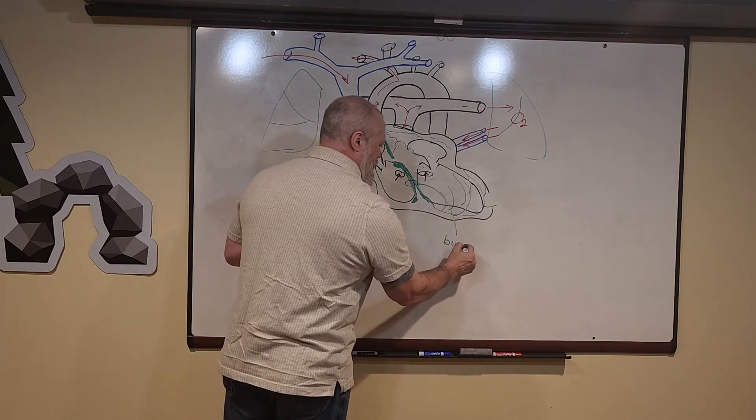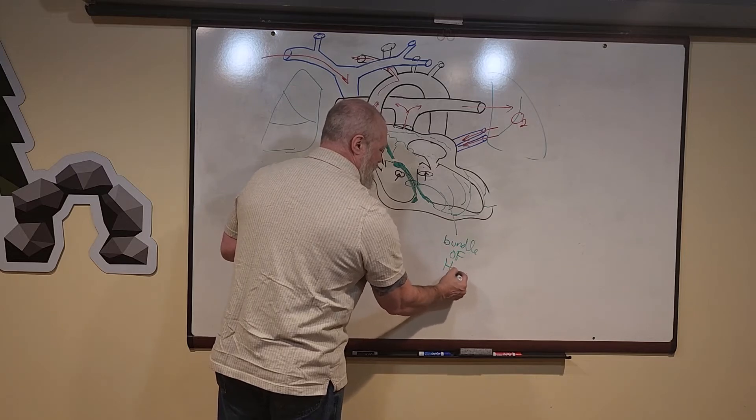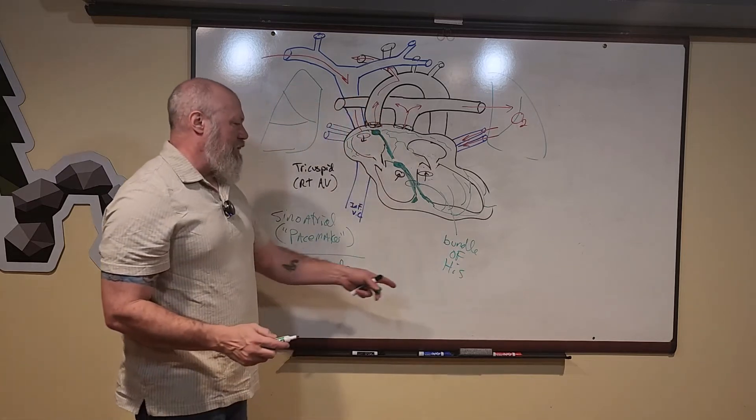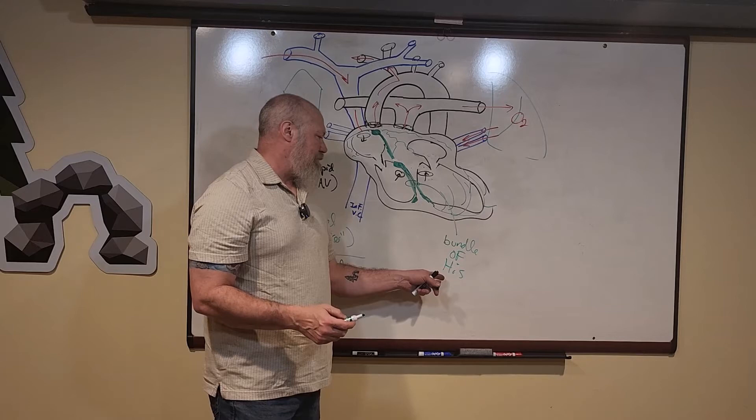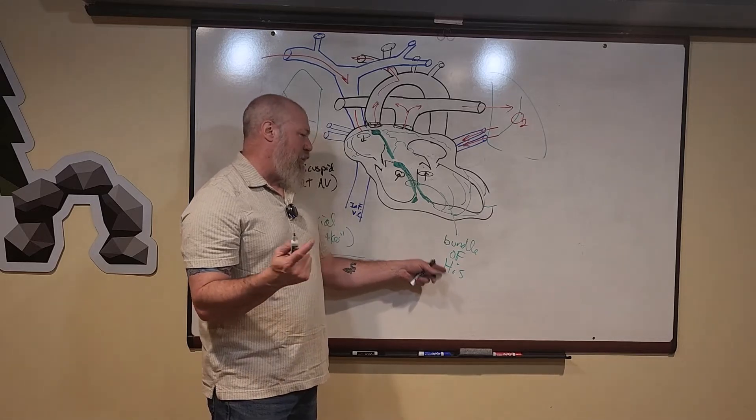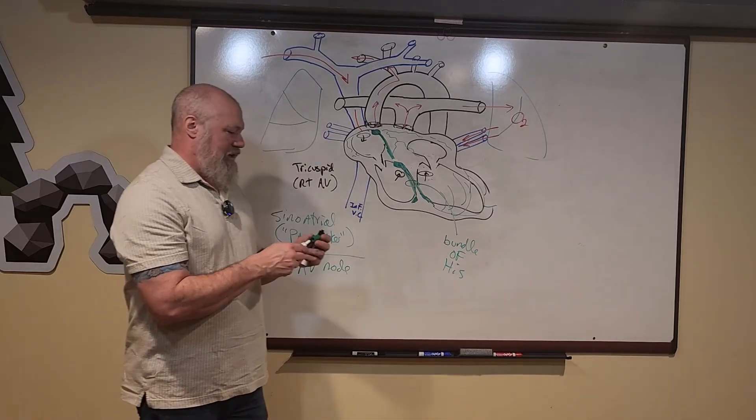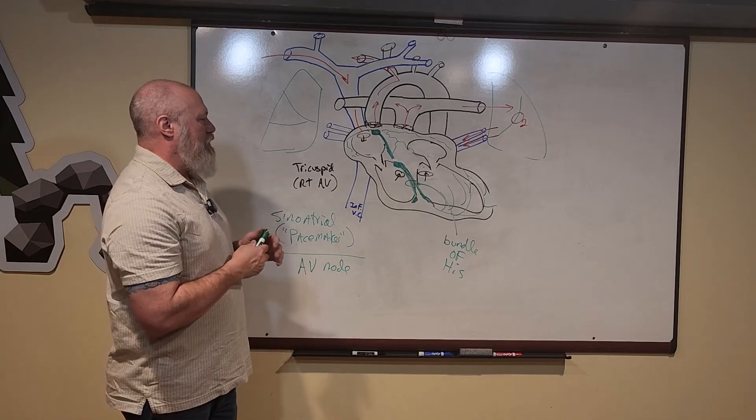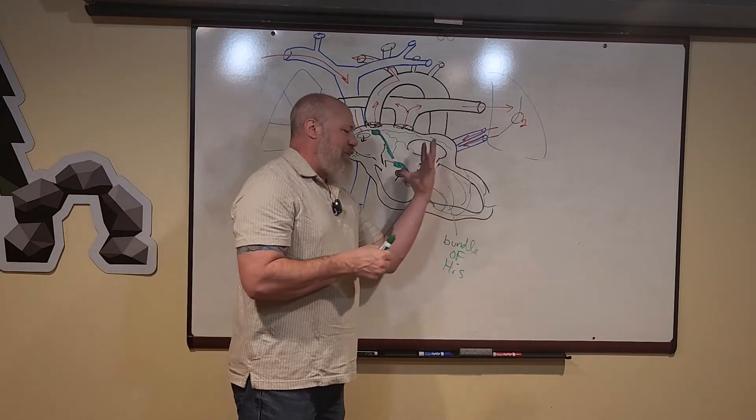I know it looks like it's 'his,' but it's like 'his bat, his ball, his glove.' It's the bundle of His, or the atrioventricular fibers. Then these fibers that spread back up through the ventricles are the Purkinje fibers.